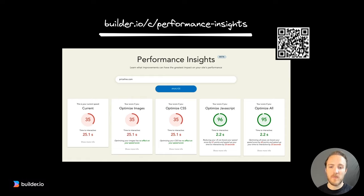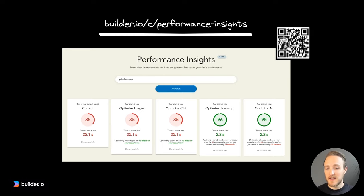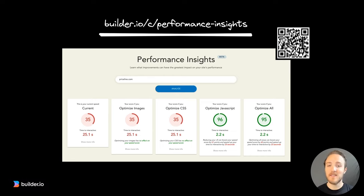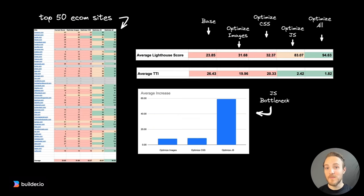You can see an example where the base performance score is a 35 — pretty normal for a large-scale website. Optimizing images, such as using next-gen formats, proper sizing and compression, didn't actually change the performance much in this case. Similarly, optimizing CSS — removing unused styles and loading fonts optimally — did not move the needle much either. The last test is eliminating JavaScript entirely to show the maximum achievable benefit from reducing client-side JavaScript, and as you can see, this was the most impactful factor for this site's performance.